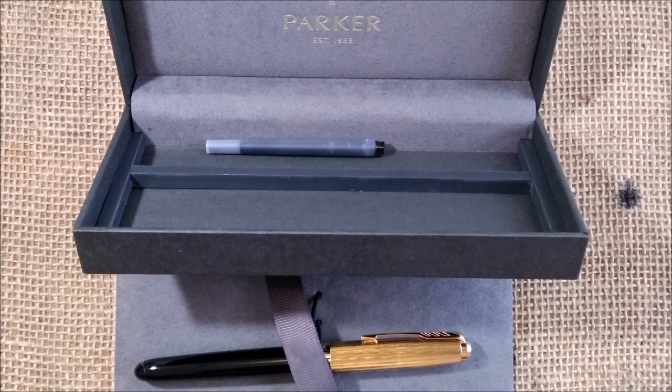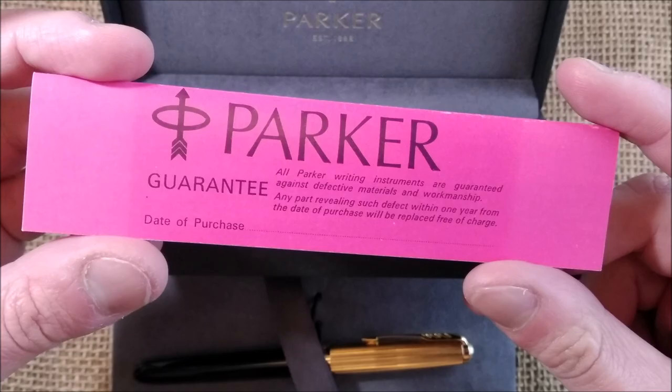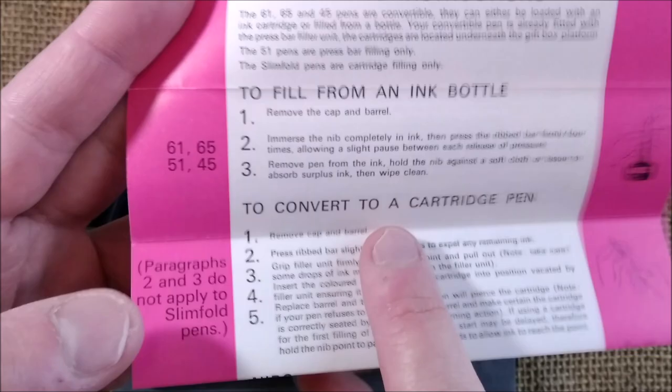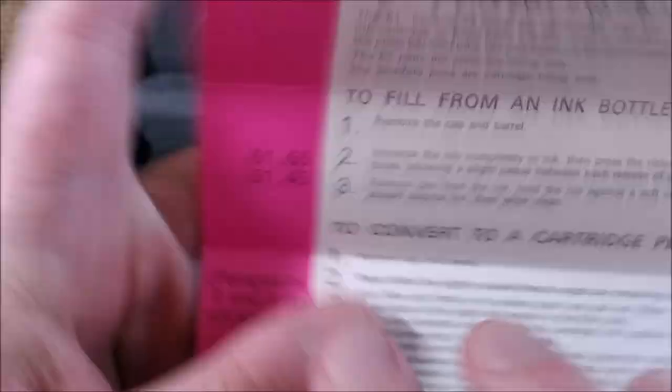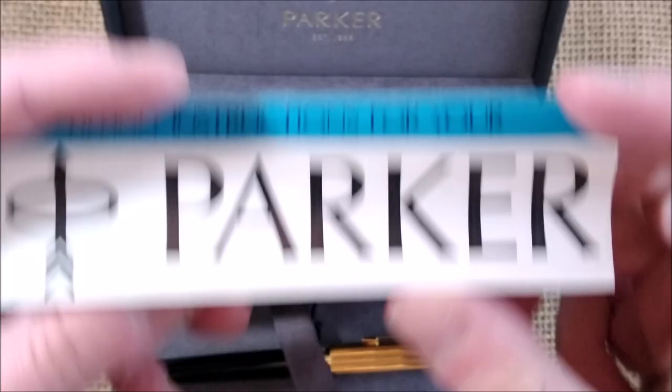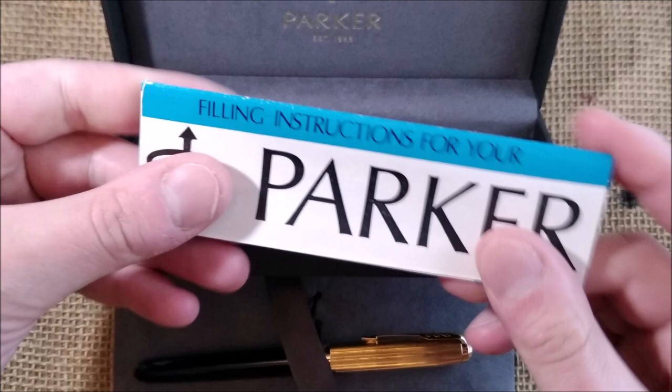One thing they could have done was to go with some designs of vintage filling instructions, these little papers that said how to fill. It had for the 61, 65, 51, 45, and they have simple instructions. They could do it with this kind of vintage look and advertise their cartridges. I don't know why they didn't do it, it's strange. It's interesting because they advertised the 51 as a cartridge converter pen. I know all we know that, but I think it's always nice to include something here.